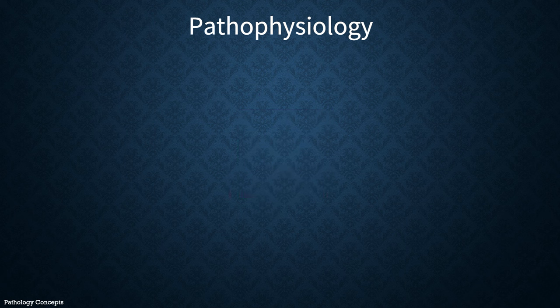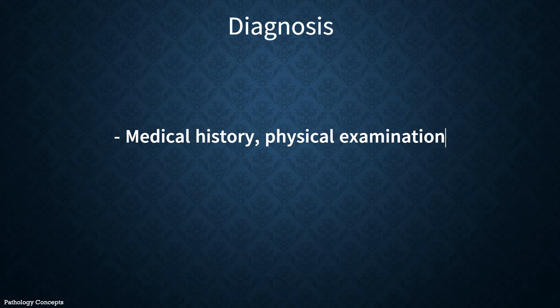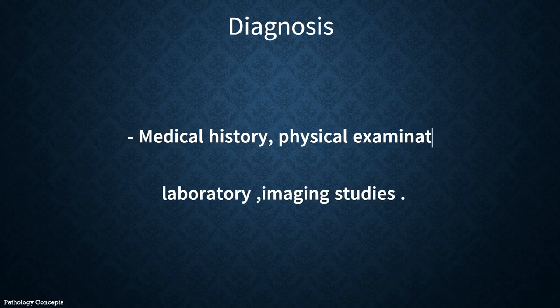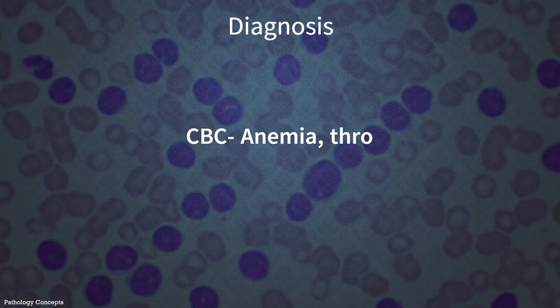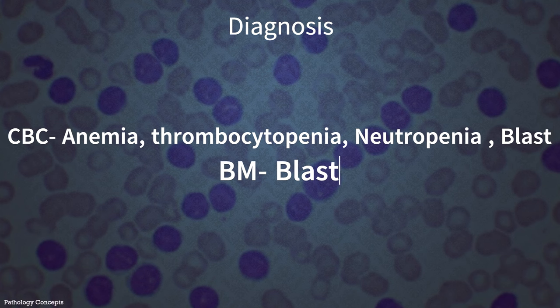The initial workup for patients with ALL should include thorough medical history, physical examination, laboratory findings, and imaging studies. Laboratory studies should include CBC with WBC count, differential, and platelet count. CBC may show anemia, granulocytopenia, thrombocytopenia, and peripheral blasts. Bone marrow examination can also reveal blasts.